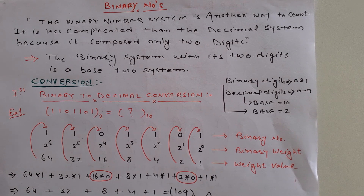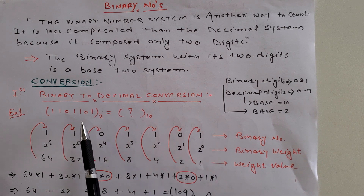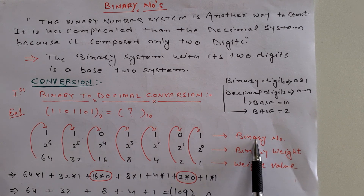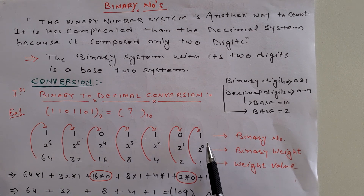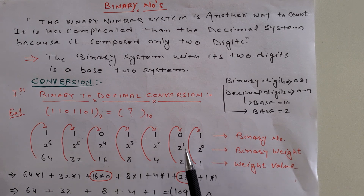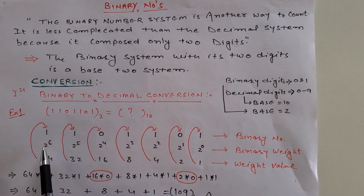Now the question is how to solve it — how to convert it. Whatever number is given, write it in spread form. Write your binary number, and then from the right side, open each digit in powers of 2 — starting from 2 to the power 0, then 2 to the power 1, 2 to the power 2, 2 to the power 3, 2 to the power 4, 2 to the power 5, 2 to the power 6.